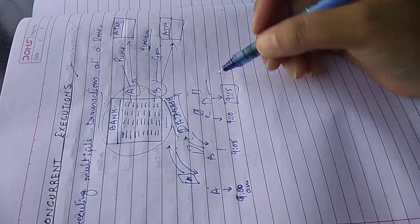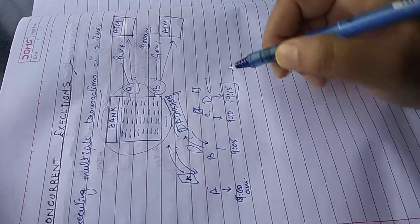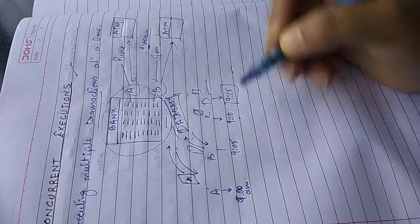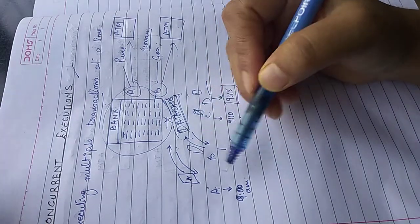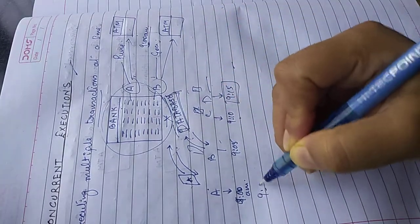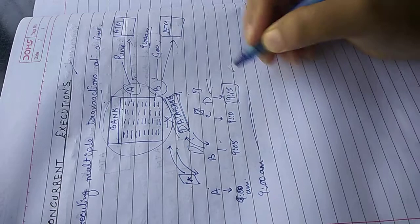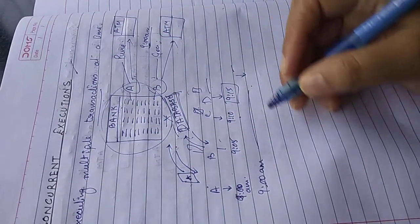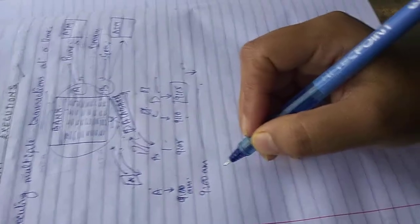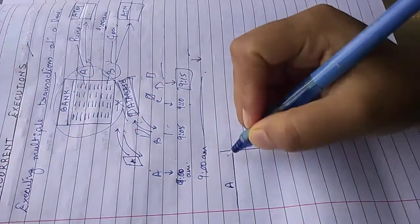So D has to wait for 15 minutes. But in real life, in real life what happens, there is no person, there is a DBMS. And these transactions, how they happen? All are going at 9 AM same and everyone gets their money at the same time. Now how this happens?